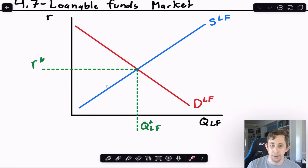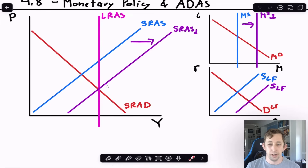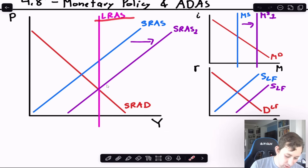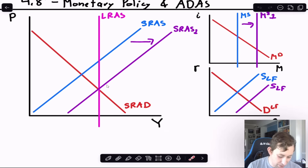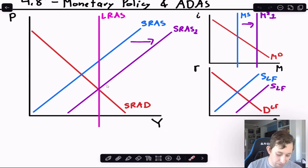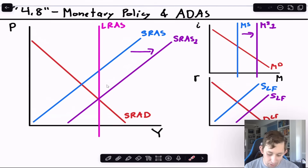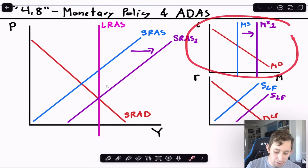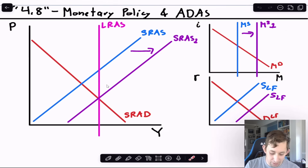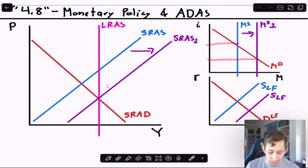Now we combine all three graphs with the AD/AS model to see how monetary policy works. Take a recessionary gap example, where the long-run output Y-bar is to the right of where short-run AS and AD currently intersect. The Fed uses expansionary monetary policy — say, increasing the money supply. In the money market graph, the money supply curve shifts right, causing the nominal interest rate to fall.